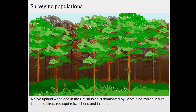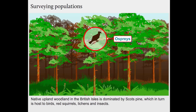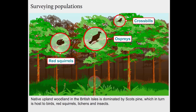Native upland woodland in the British Isles is dominated by Scots pine, which in turn is host to birds, red squirrels, lichen and insects.